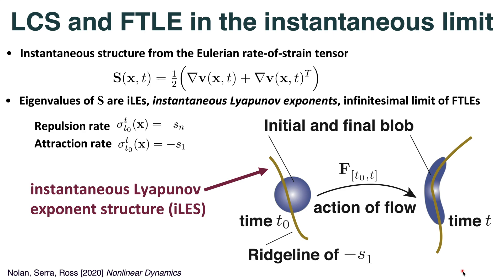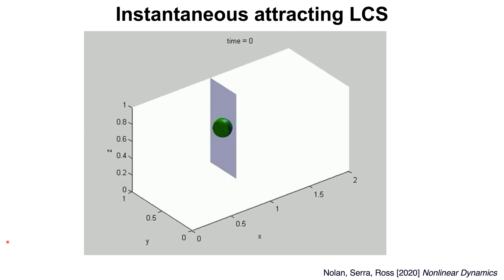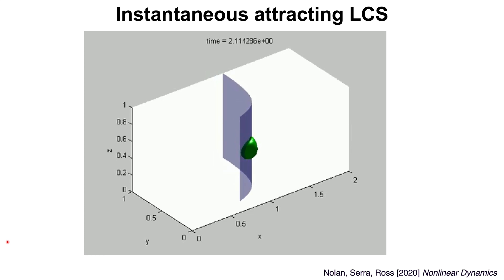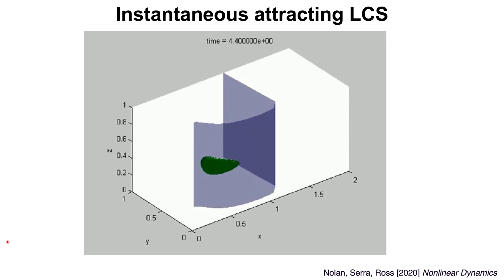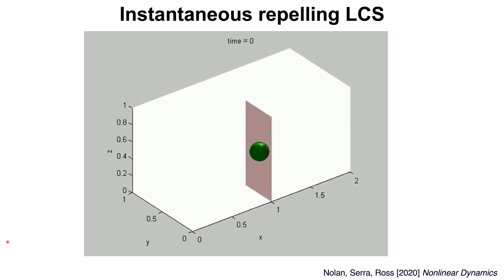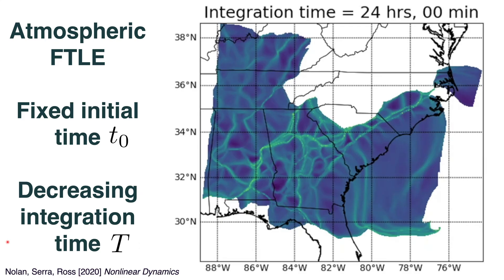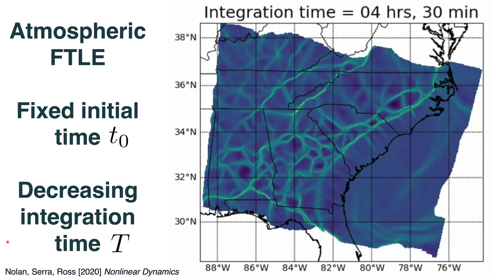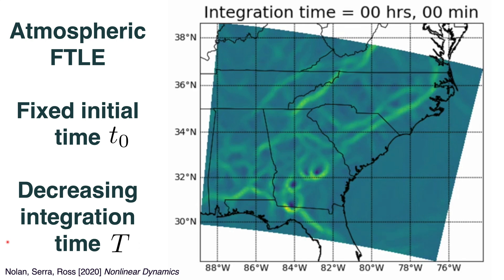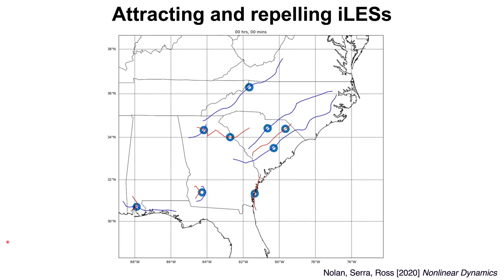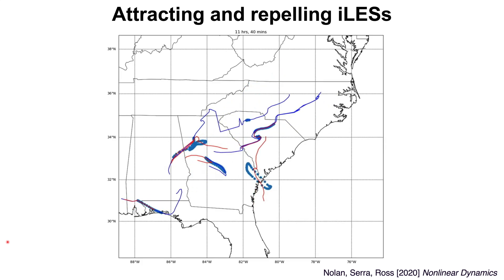We use the same procedure of looking at a ridge of this instantaneous Lyapunov exponent to define an instantaneous Lyapunov exponent structure. An attracting ridge line will attract blobs that straddle it. To illustrate: a green blob straddling a blue attracting LCS, advected forward in time, spreads out along it. A green blob straddling a repelling LCS moves almost perpendicular to it. Looking at the atmosphere on one layer — 2D LCS gives curves — fixing an initial time and decreasing the integration time, we converge not to a uniform field but to the instantaneous Lyapunov exponent. We can extract attracting and repelling instantaneous Lyapunov exponent structures and watch how they deform fluid blobs over short time.